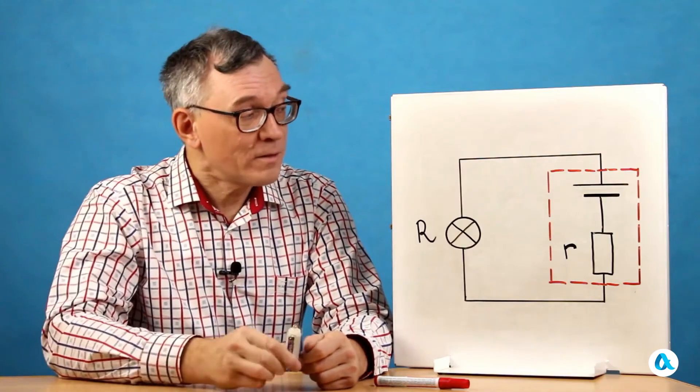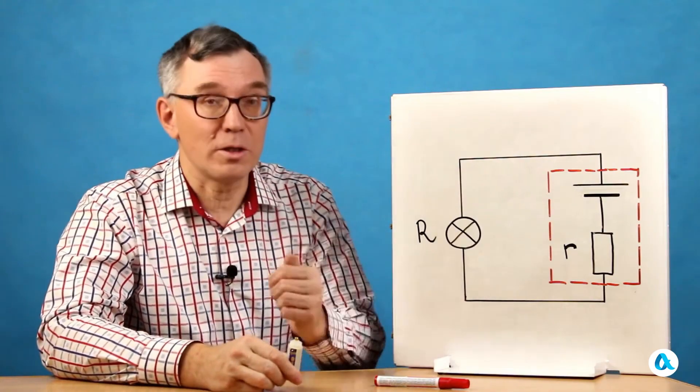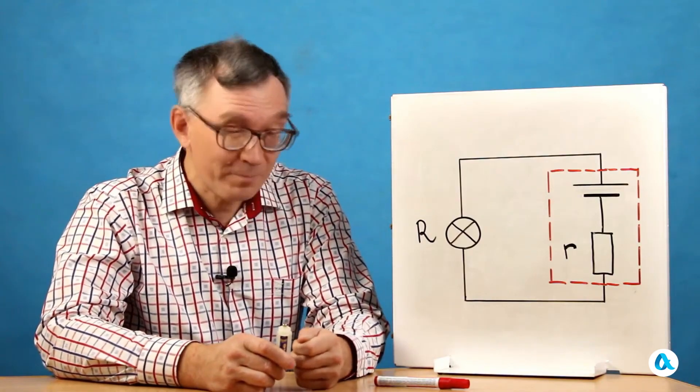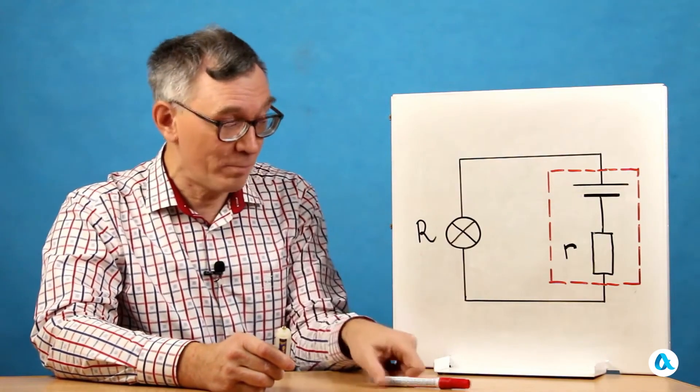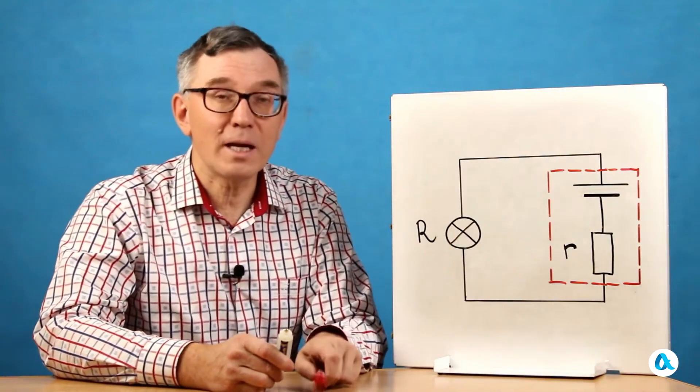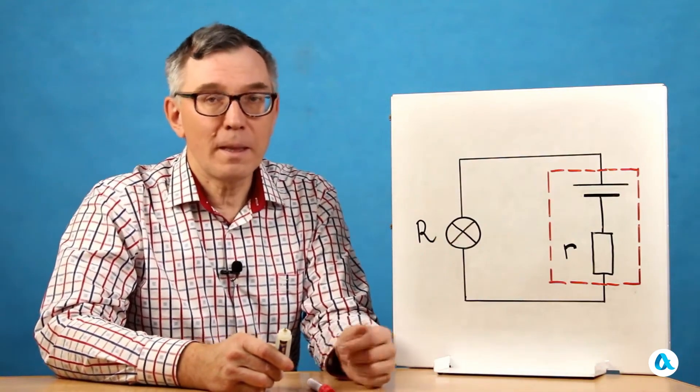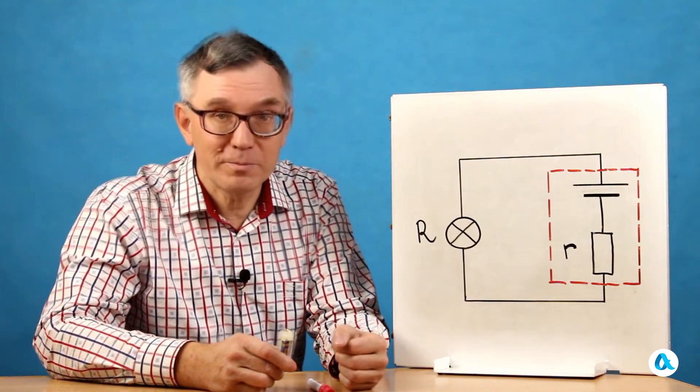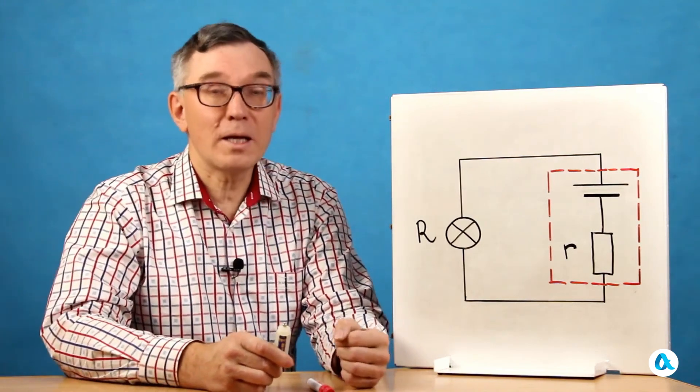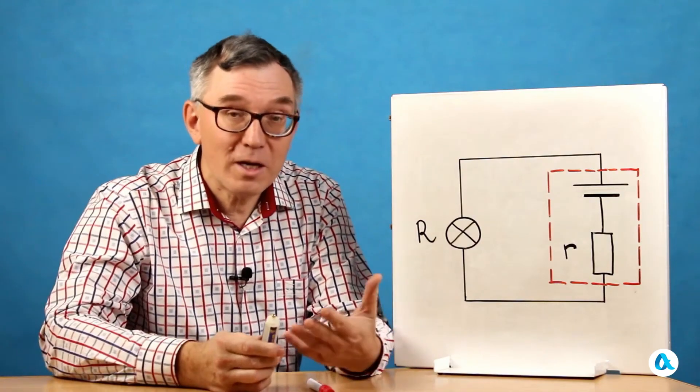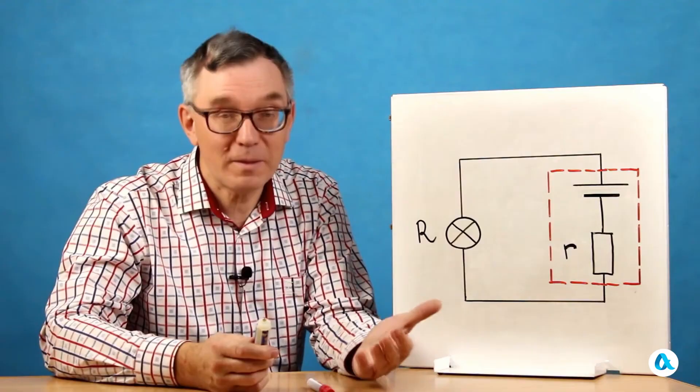But when we add a light bulb to the circuit, the charge that receives this energy from the battery gives 3.4 joules to the bulb, and another one joule is lost inside the battery itself. And that's why we can say that the battery has internal resistance. And it should be emphasized that we cannot get rid of the battery's internal resistance in any way. It's kind of built into it, into its very design.